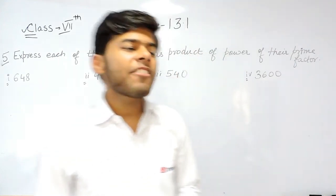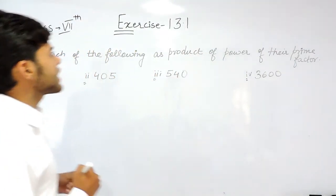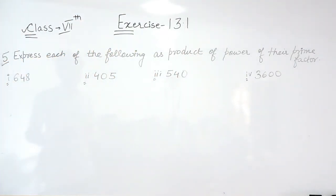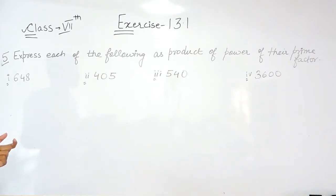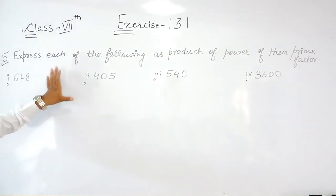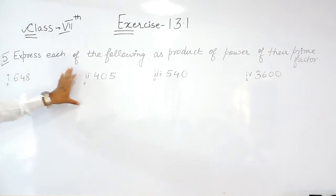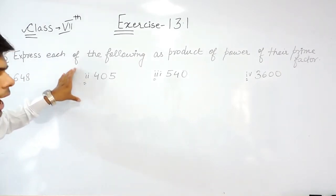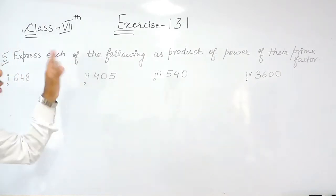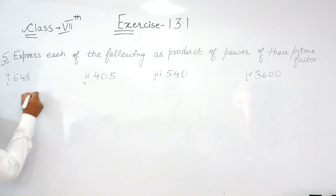Hello everyone, this is the fifth question of exercise 13.1 of class 7 and the chapter is exponents. This question says to express each of the following as a product of power of their prime factors. This means we have to do the prime factorization of these numbers and then write it in the form of their powers.